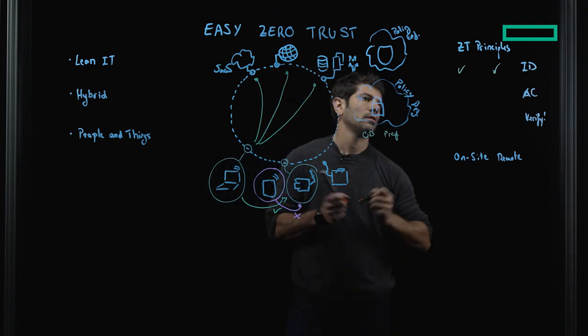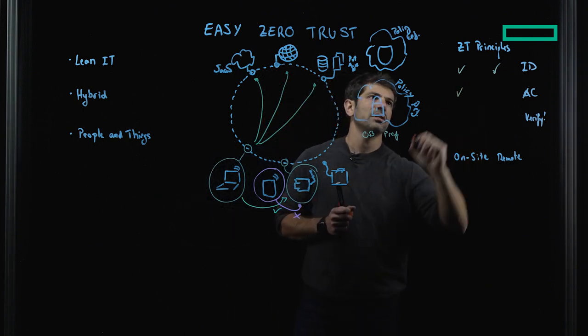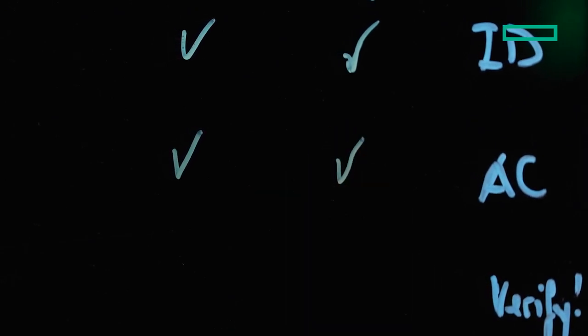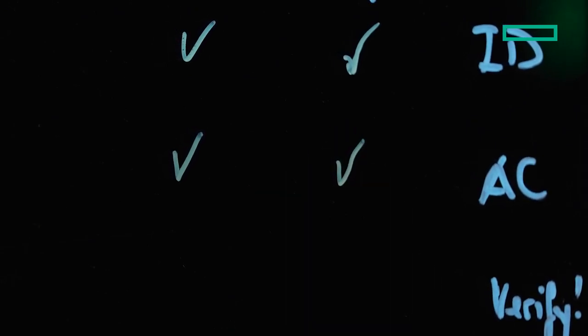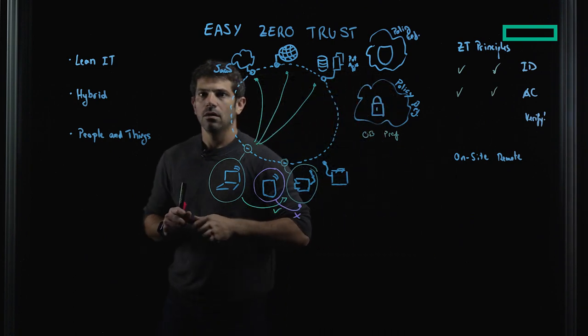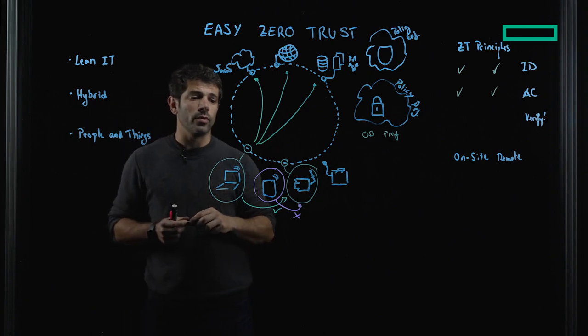Coming back here, dynamic segmentation is helping us when we are on site solve the access control. Of course, with SWIG, CASB, ZTNA, it's helping us anywhere - both when we're on site as well as when we are remote.